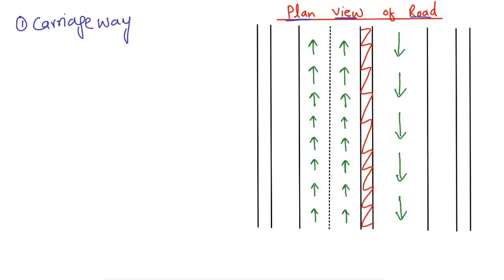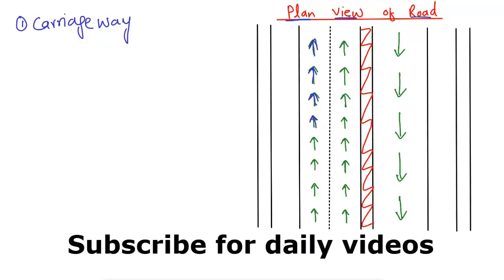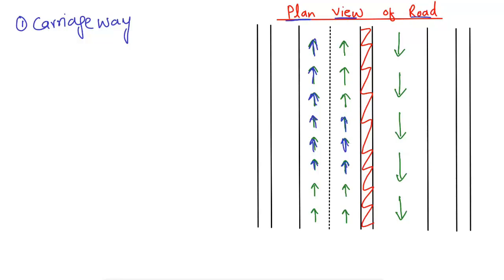What is carriageway and for which purpose is it used? You see here the two lanes with green color where I make arrows showing where the main traffic is going on the road — this is known as the carriageway. This is a two-lane carriageway because the traffic is moving in the same direction in two lanes.